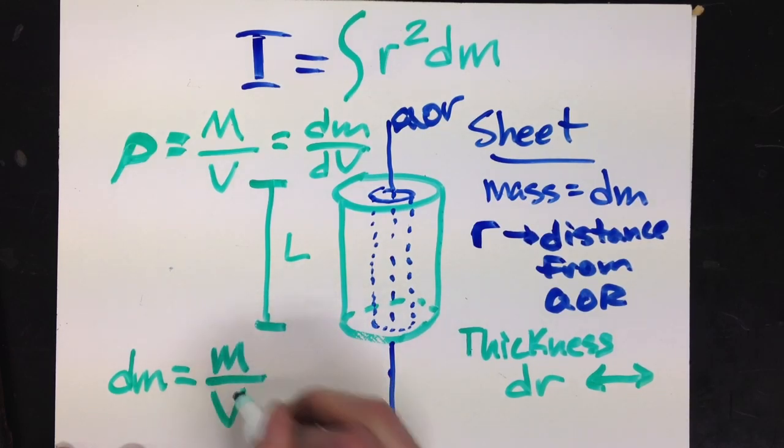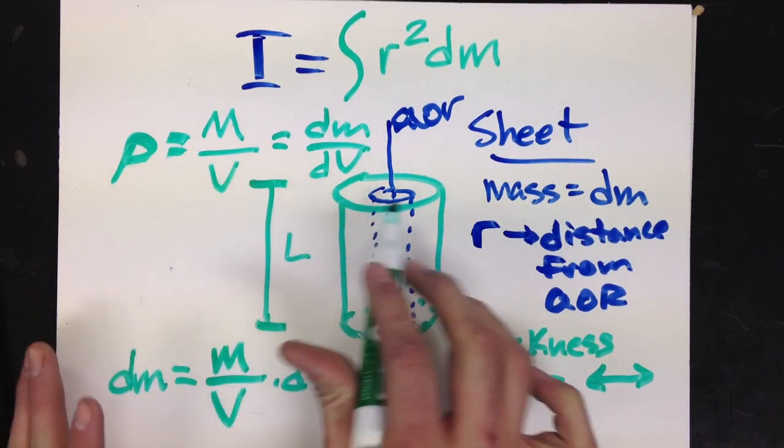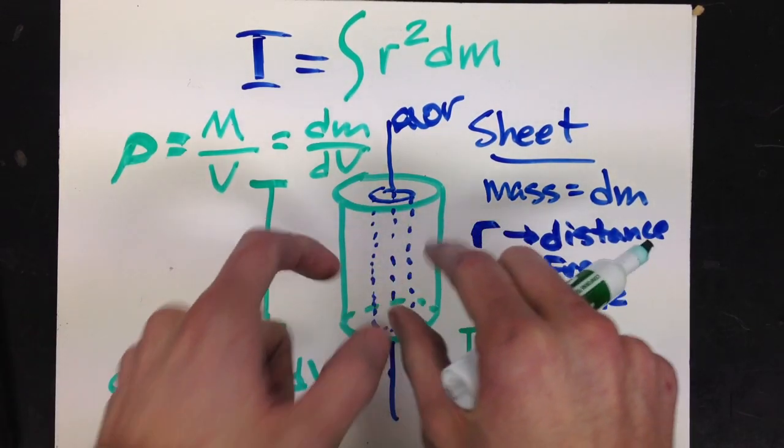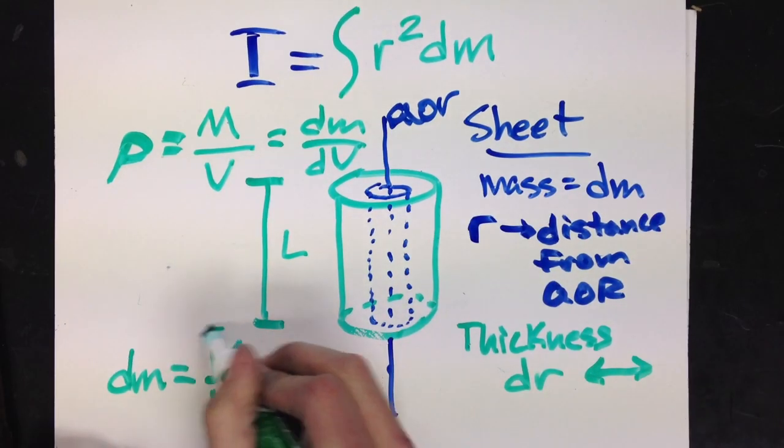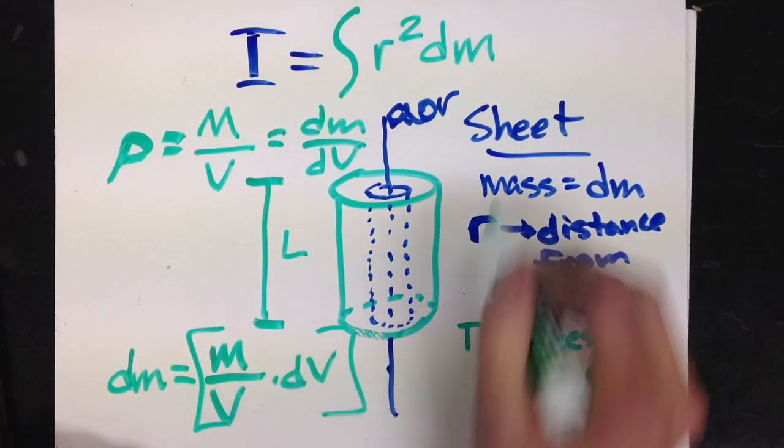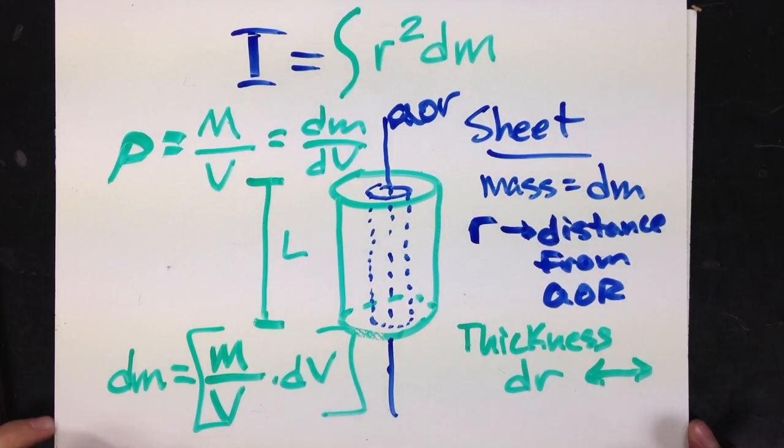I get dm being equal to total mass over total volume, which is just density of the cylinder. So I'll write total mass, total volume, times dv, the very small volume of my thin sheet. Okay, so I can take this and plug it into dm.